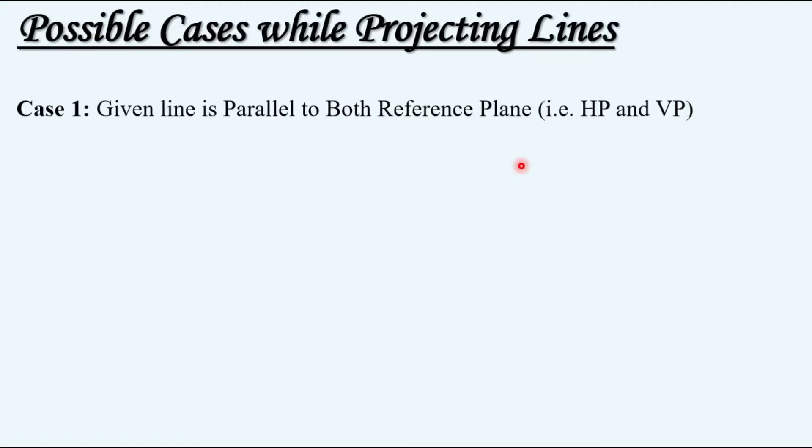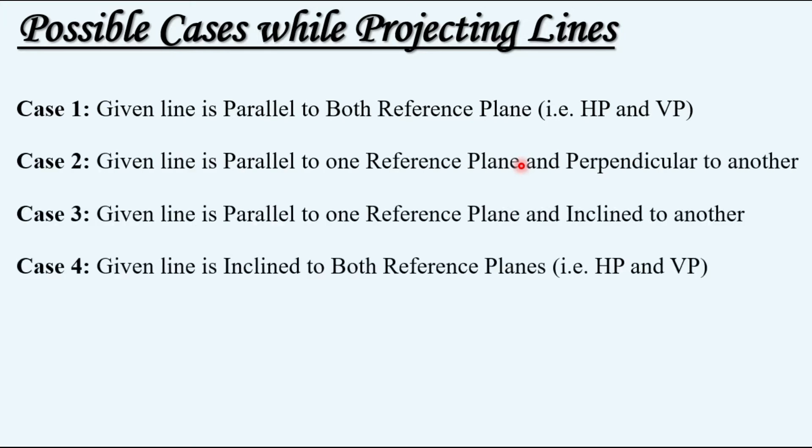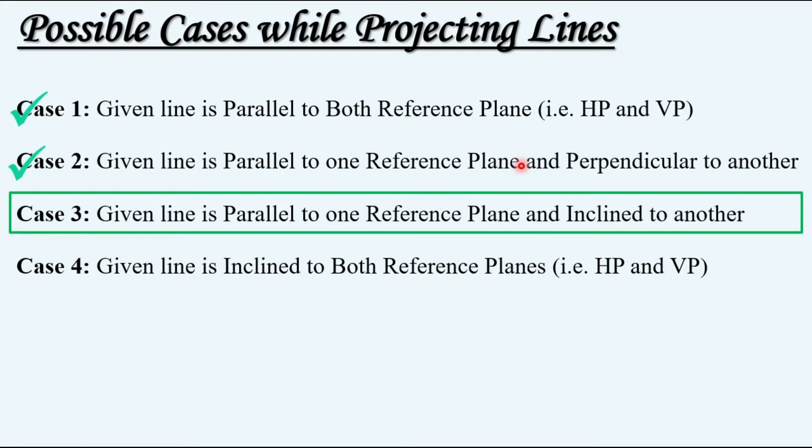The possible cases for projecting lines: as we have seen in the previous video, there are four possible cases. Out of these, the first case is already discussed and the link is provided in the description. The second case has been discussed with both sub-cases possible. Today we will look at case number three: when the given line is parallel to one reference plane and inclined to another.